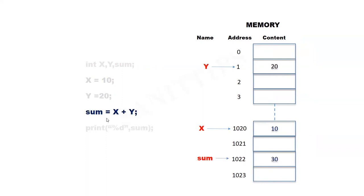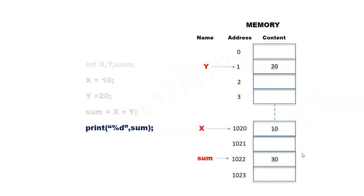The statement sum equal to x plus y will retrieve the contents of x and y, add them together, and store the result in the memory location with name sum. Therefore, the value 30 will be placed in memory location 1022. The next statement retrieves the value from memory location 1022 and prints it on the screen. As a result, the value 30 will be displayed on the screen.